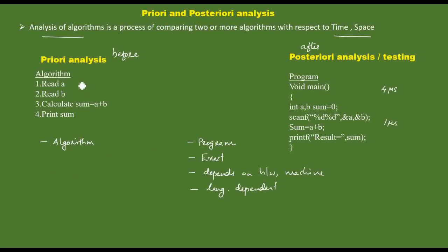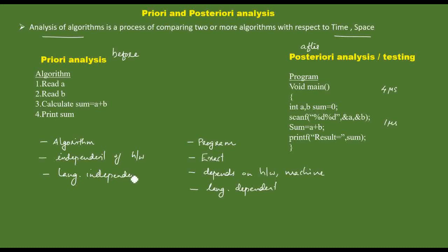The priori analysis, on the other hand, is done on the algorithm itself. It is independent of hardware and language-independent. This makes it the most useful and acceptable form of analysis. The priori analysis uses approximate values rather than exact values.